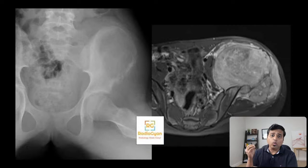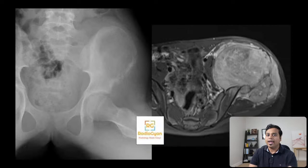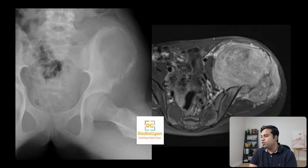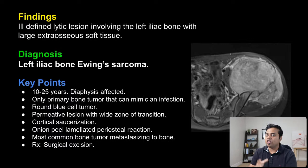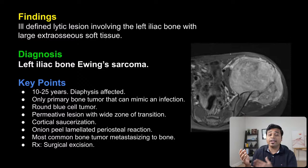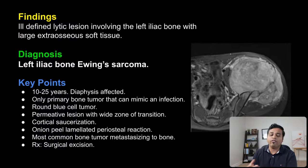Chondrosarcoma would have more ring-and-arc type calcification and chondroid matrix, which we don't see here, so I would put that lower down. Plasma cell tumor would be seen in older patients. Ewing's sarcoma — we discussed this last time. Most commonly the diaphysis of bones is affected. It's the only bone tumor that can mimic an infection, as the patient can have fever and elevated ESR. It falls into the category of round blue cell tumor — very aggressive, rapidly growing tumors — and it's commonly metastatic. It can give rise to onion-peel or laminated periosteal reaction. Treatment is surgical excision. An important fact: this is the most common tumor that metastasizes to bone.